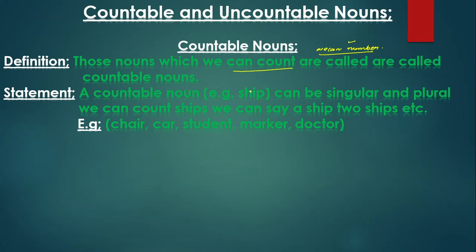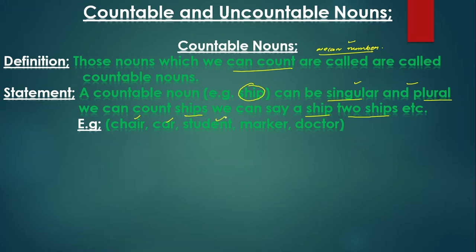Let's take one example — a countable noun: ship. It can be singular and plural both. We can count ships — we can say one ship, two ships, a thousand ships, a billion ships, 357 ships. Other examples include chair, car, student, marker, and doctor — all of these we can count.